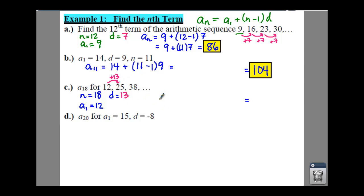Plug it in your formula. And we end up with a sub 18 is equal to 12 plus 18 minus 1 all times d, which is 13. So we're going to get a large number here. You should get 233. So if you get 233 here, then you are golden.